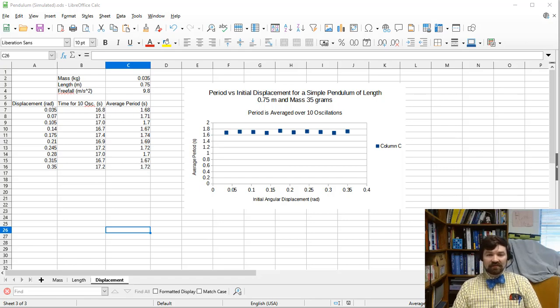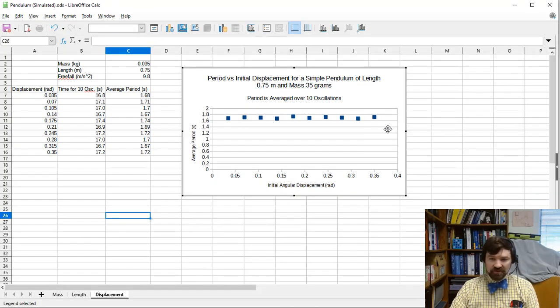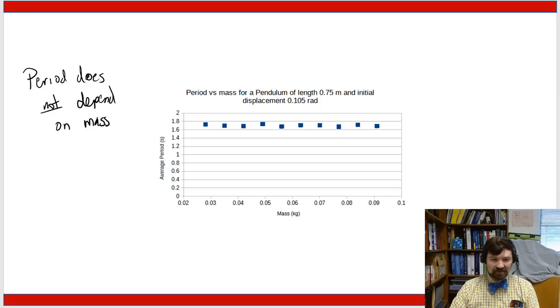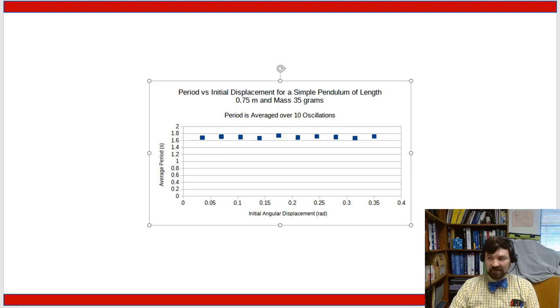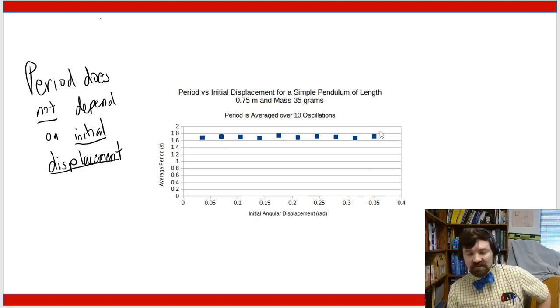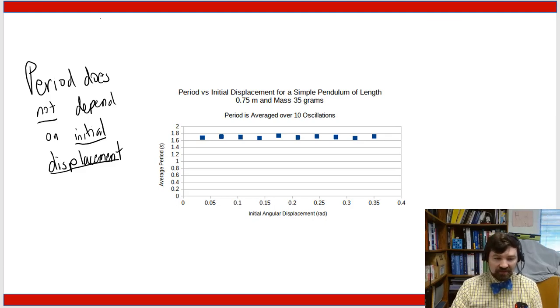So we've got our plot of period versus initial displacement here. And again, looks like pretty much a horizontal line. So as with this one, period doesn't depend upon initial displacement. Again, we know this because when we've plotted the data, it falls along more or less a horizontal line whose main deviations are due to my reaction time. So now let's look at the last of the plots. And that last plot is, of course, the period versus length.